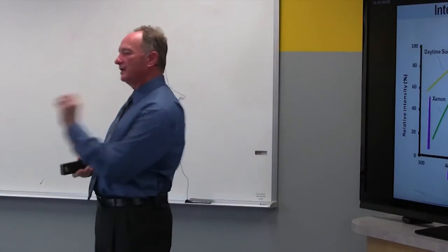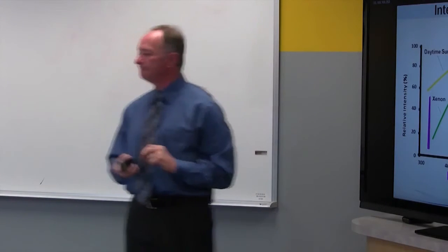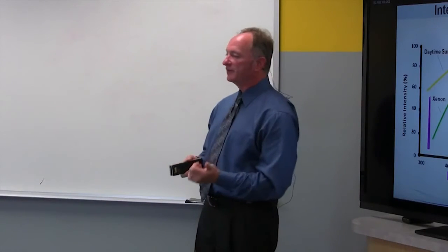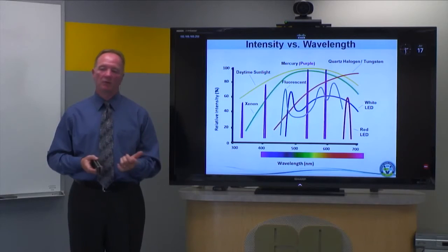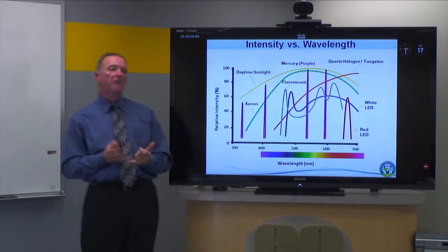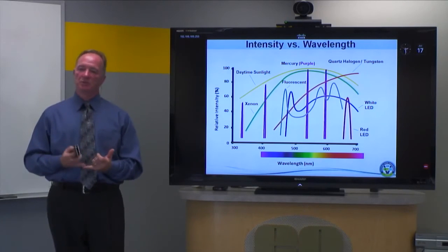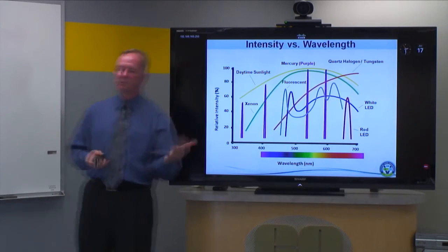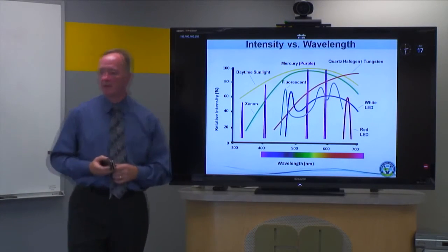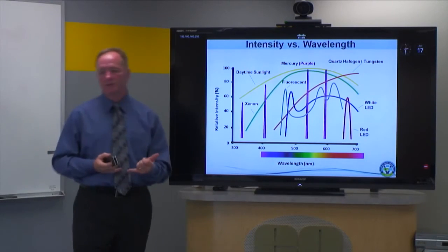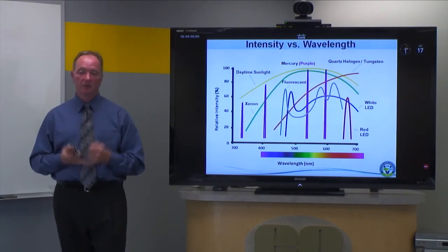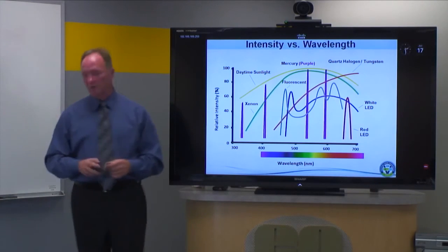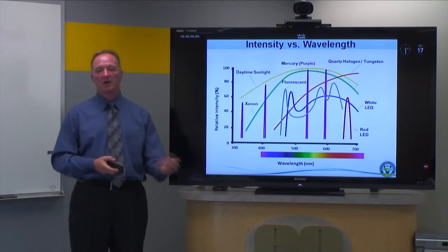White LEDs are interesting: they have a broad spectrum but also a big peak at 470 nm, because white LEDs are actually blue LEDs — the blue light fluoresces a white phosphor inside the LED itself, giving a broad spectrum output with a lot of blue contribution. Single-color LEDs like reds, greens, or blues have single peaks — not as narrow as mercury bands, but useful, and we'll show how those are applied.